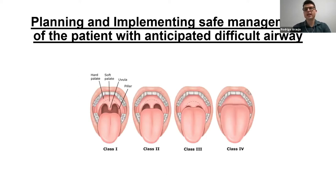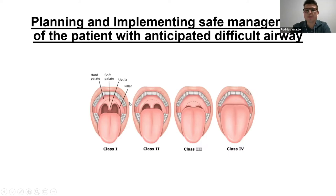This is our classic Mallampati score. Class one: we can see the hard palate, soft palate, uvula, and pillars. Class two: we can see the hard palate, soft palate, and beginning of the uvula. Class three: we can see the hard palate and soft palate. Class four: we can see only the hard palate.